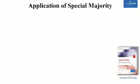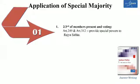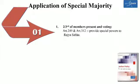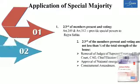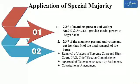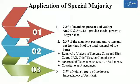Application of Special Majority. Special Majority of First Type, that is 2/3 of the members present and voting — this type of majority is required under Article 249 and 312. Both these articles provide special powers to Rajya Sabha. Special Majority of Second Type — 2/3 of the members present and voting and not less than half of the total strength of the House — is required for removal of judges of Supreme Court and High Court, CAG and Chief Election Commissioner, approval of National Emergency by Parliament, and for Constitutional Amendment. Special Majority of Third Type, that is 2/3 of the total strength of the House, is required for impeachment of President.